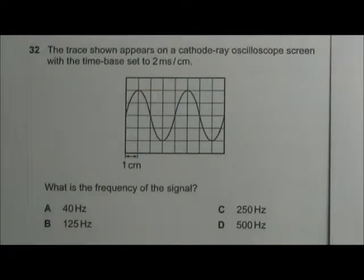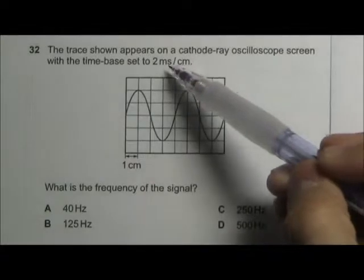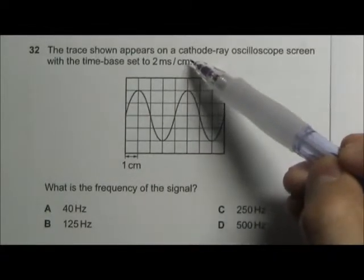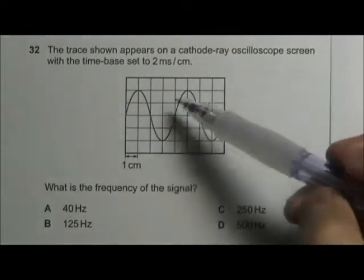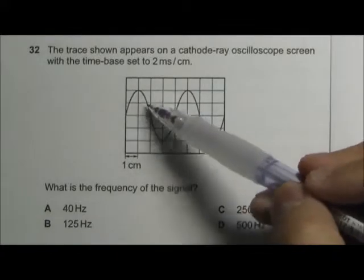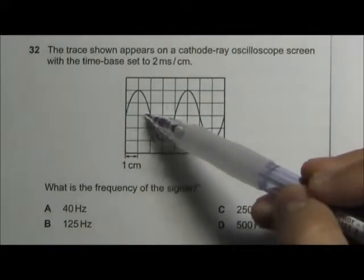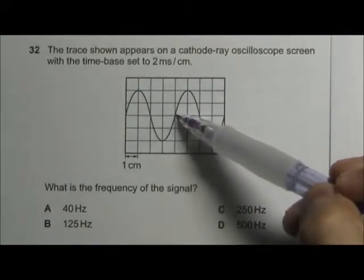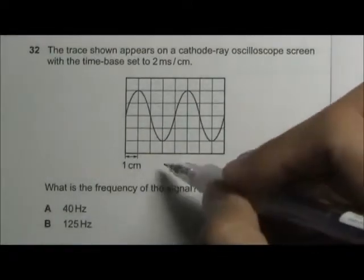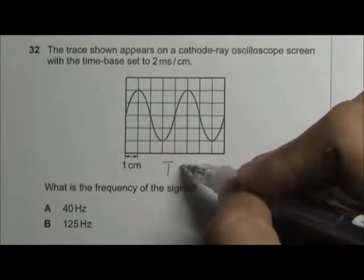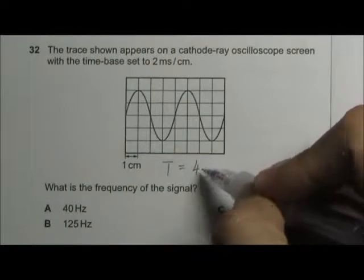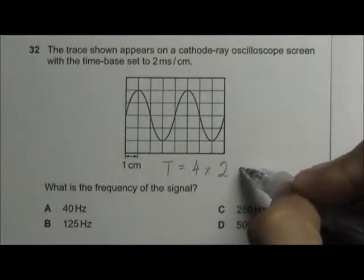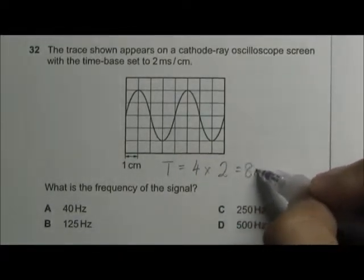We are given a screenshot of a CRO screen, and the time base is set to 2 milliseconds per cm. We can see that one entire wave is made out of 1 cm, 2 cm, 3 cm, 4 cm. So that means the period of the signal is 4 times 2 milliseconds, which gives us 8 milliseconds.